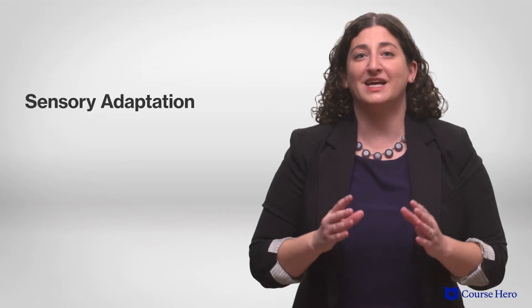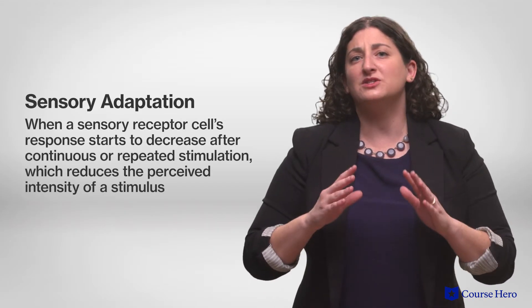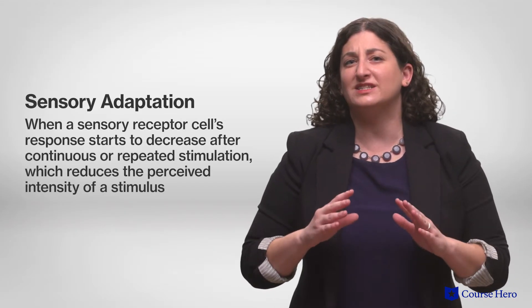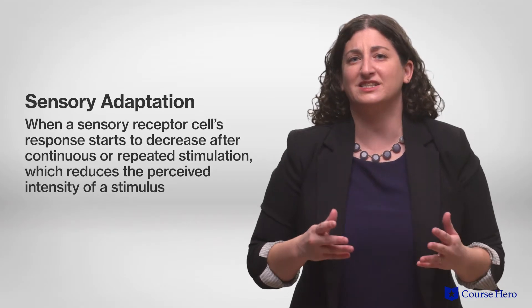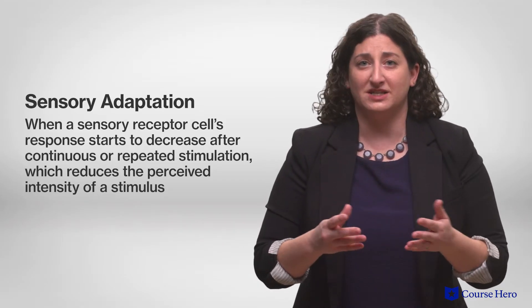Sensory adaptation occurs when a sensory receptor cell's response starts to decrease after continuous or repeated stimulation, which reduces the perceived intensity of a stimulus. For example, you might easily detect a foul odor when you walk into a room, but over time you perceive it less and less. Sensory adaptation can occur in any of the five major senses.